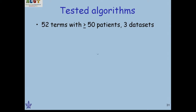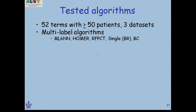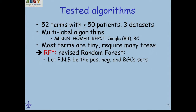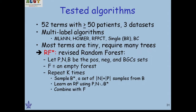As in the expression case, we want to know for which disease ontology terms we can learn something robust. Here we have 52 terms with at least 50 patients from at least three different studies. Running multi-label algorithms with leave-dataset-out cross-validation, we observed that tree-based or random forest algorithms work better. Most terms are tiny — 100 or 200 samples — and you need many trees for robustness. We slightly modified the random forest by downsampling the background set per disease, enabling 1,000–2,000 trees per disease while giving negative sets more weight during learning.